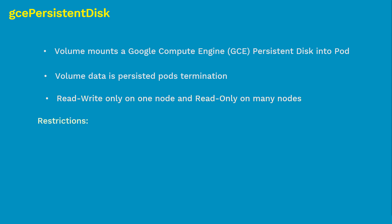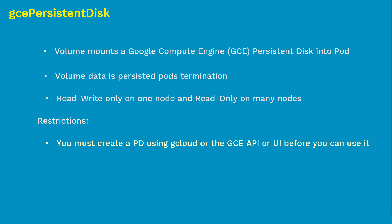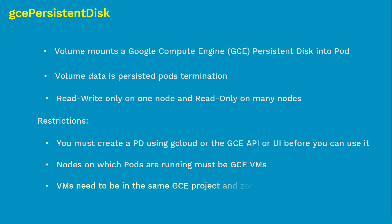There are some restrictions on how you can use GCE persistent disk. These restrictions are similar to other cloud-supported disks such as AWS Elastic Block Store and Azure Disk. First, you must create a GCE persistent disk before you can use it in a pod spec. Second, the Kubernetes worker node on which pods are running must be a Google Cloud instance. And finally, those VMs need to be in the same GCE project and zone as the persistent disk. At a very high level, AWS Elastic Block Store and Azure Disk are similar to this and have the same restrictions.